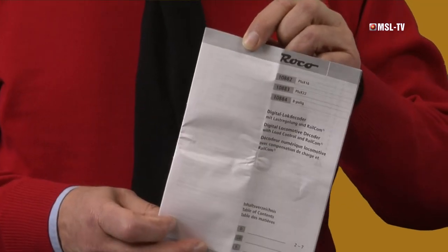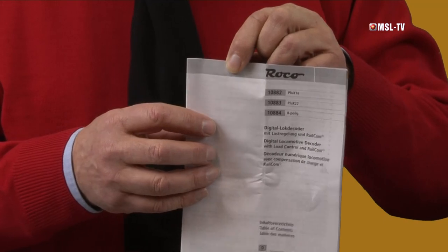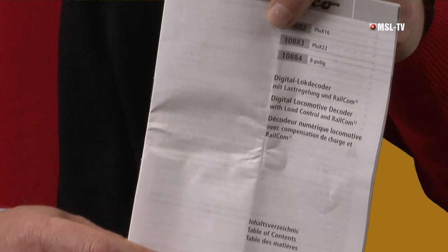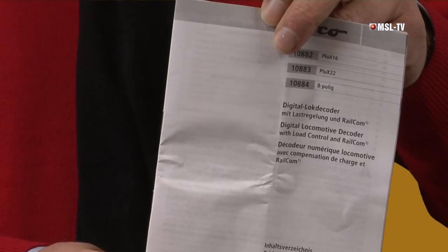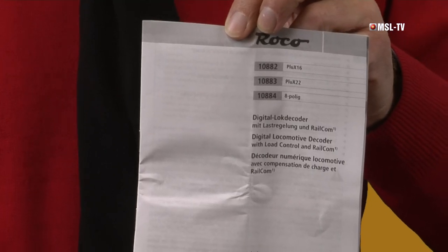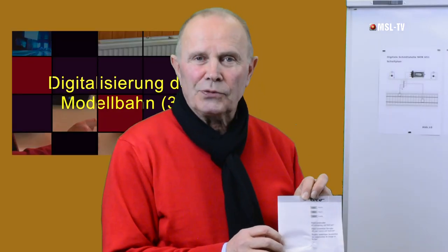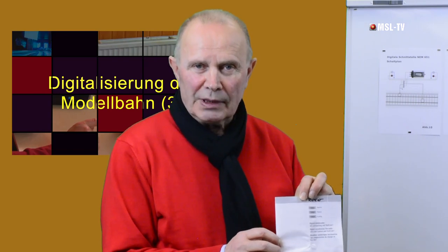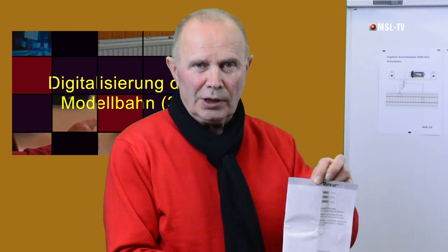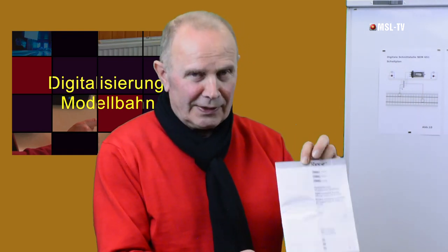Stellen Sie sich vor, Sie wollen Decoder kaufen – dann steht drauf, welche Schnittstelle bei welcher Lok. Und sollten Sie mal Arbeiten am Decoder vornehmen oder die Lok zum Händler bringen zur Reparatur, dann wird er Sie fragen: was ist für ein Decoder drin, welcher Typ? Nehmen Sie die Bedienungsanleitung mit, zeigen das vor. Sie wissen Bescheid, der Händler weiß Bescheid.